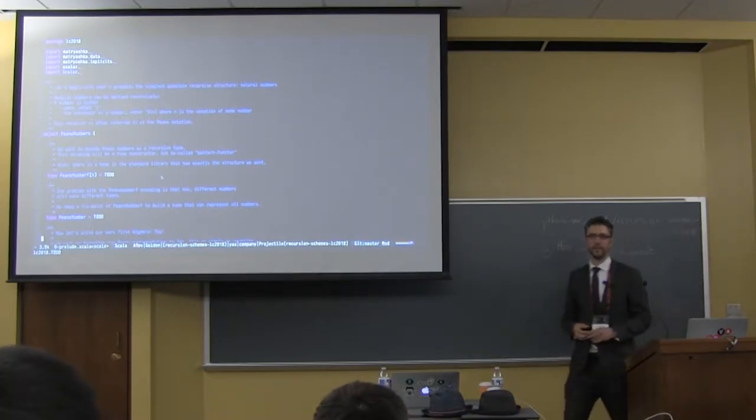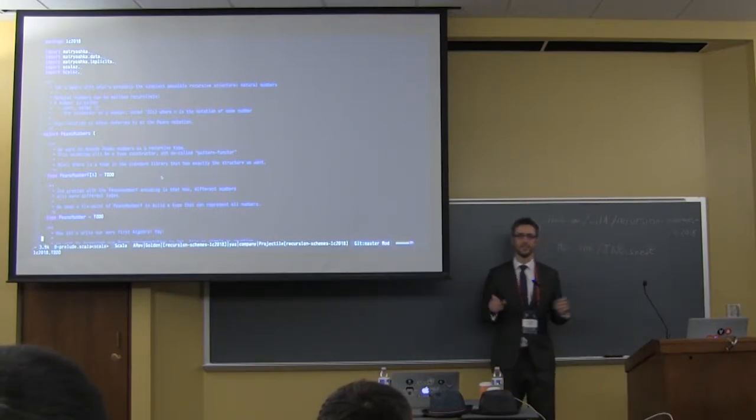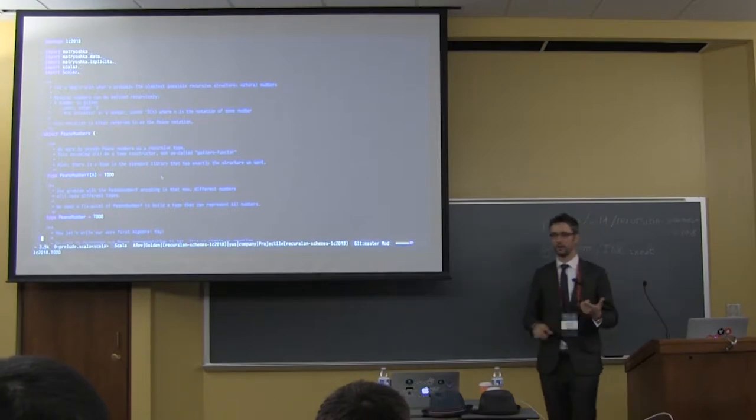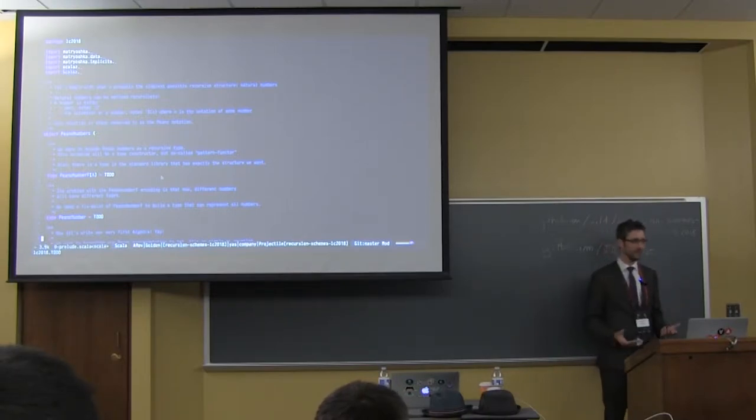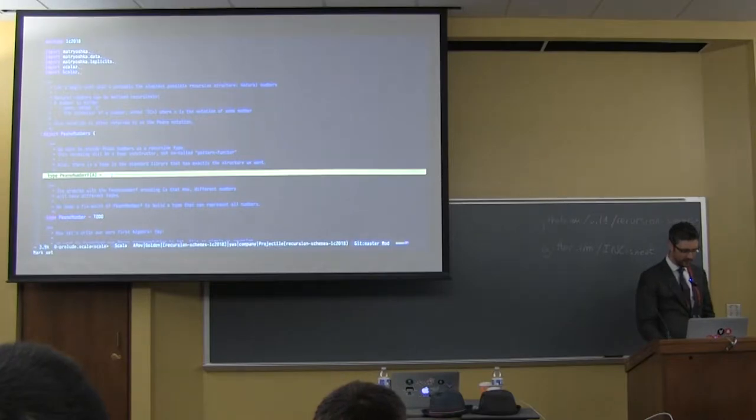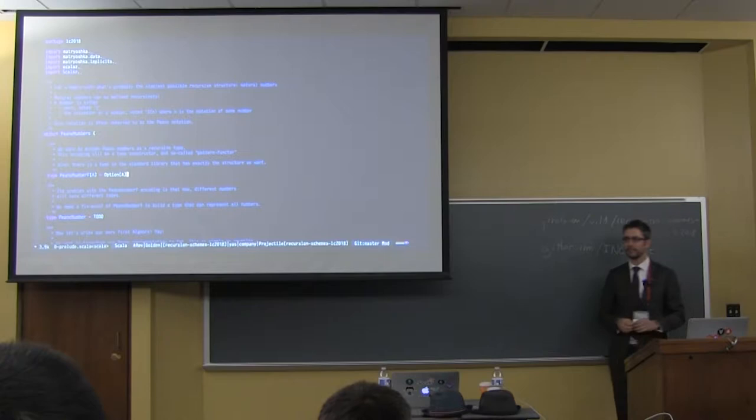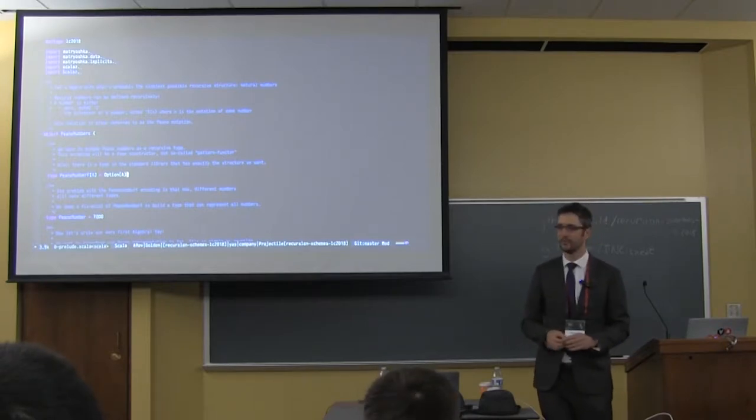So, we are working with Peano numbers, and on the top we have a little definition on how Peano numbers work. We have a zero and we have successor of m. And if you replace z by none and successor by option, you see that you get exactly the same structure, right? So maybe our Peano number type is in fact only option of a. Does that make sense?